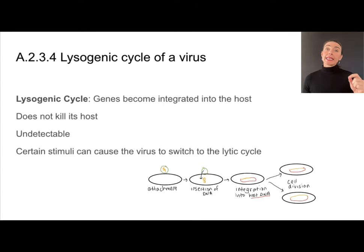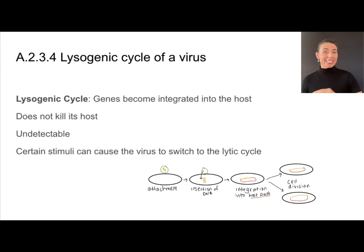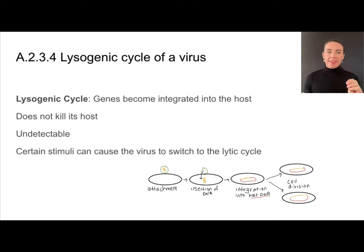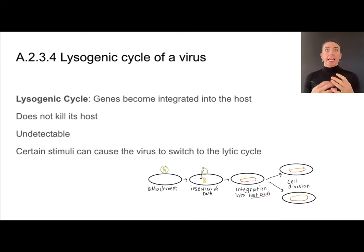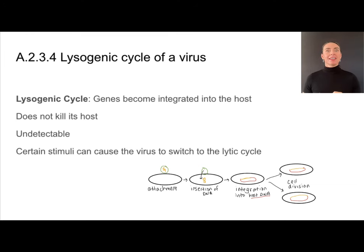In the lysogenic cycle, the viral genes become integrated into the host and it does not kill the host cell. Because of that, it is undetectable. These viruses can incorporate their DNA into a whole bunch of host cells without ever being detected by the immune system.